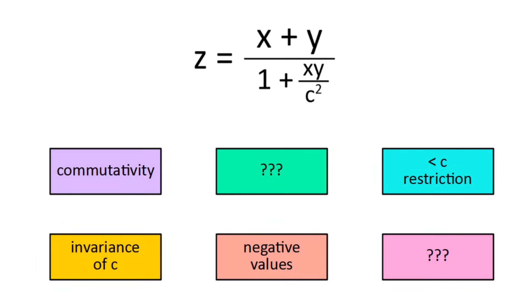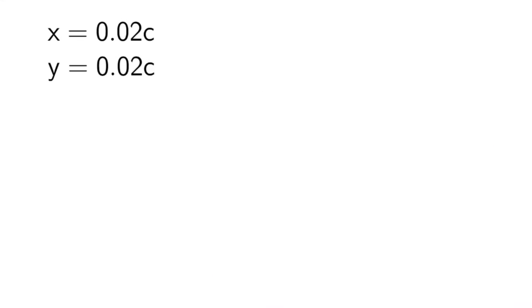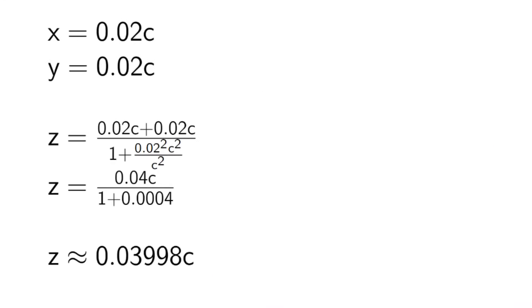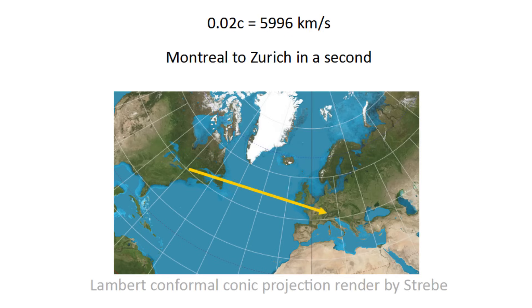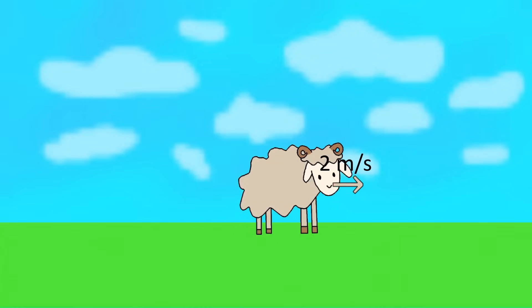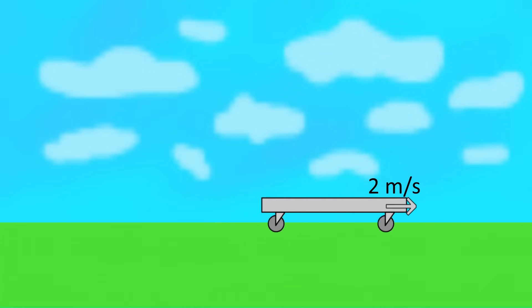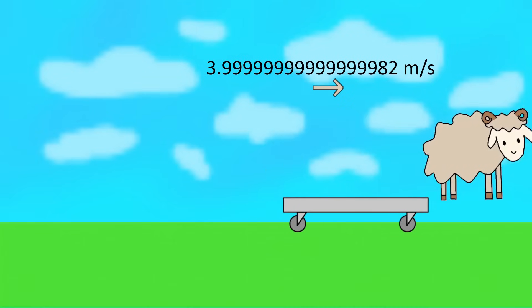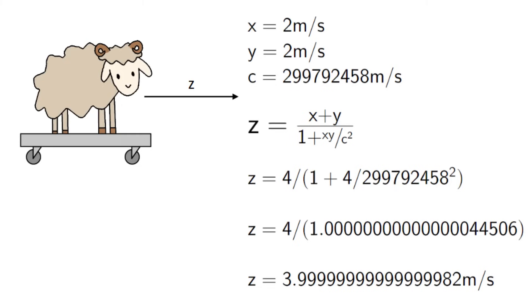Now something interesting happens if you plug in really small values. For example, if x and y are both 0.02c, the formula tells us they combine to 0.03998c, which is very close to their sum 0.04c. That's because with even just one small velocity, this term is so small that the denominator is basically just 1, which leaves us with approximately x plus y. But even just 0.02c is still 6000 kilometers a second. With the speeds we encounter on a daily basis, the difference is so small that it's not noticeably different than if velocities did add. But it is still true that if a sheet moves at 2 meters per second on a platform moving 2 meters per second, then its total velocity from the ground is 3.999999 meters per second.